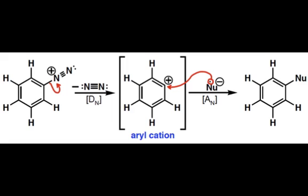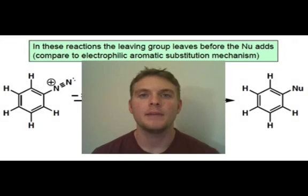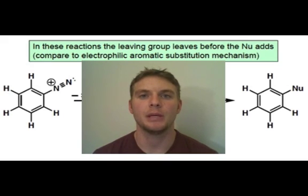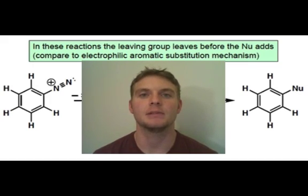Remember that this is fundamentally different than the electrophilic aromatic substitution mechanism, because in this case the aromatic ring is acting as an electrophile and not a nucleophile. In this webcast, we connected our knowledge of the nitration of an aromatic ring and how we can reduce that nitro group to an amine. The amine can then be converted to a diazonium ion, which allows access to a wide variety of substituted benzenes.